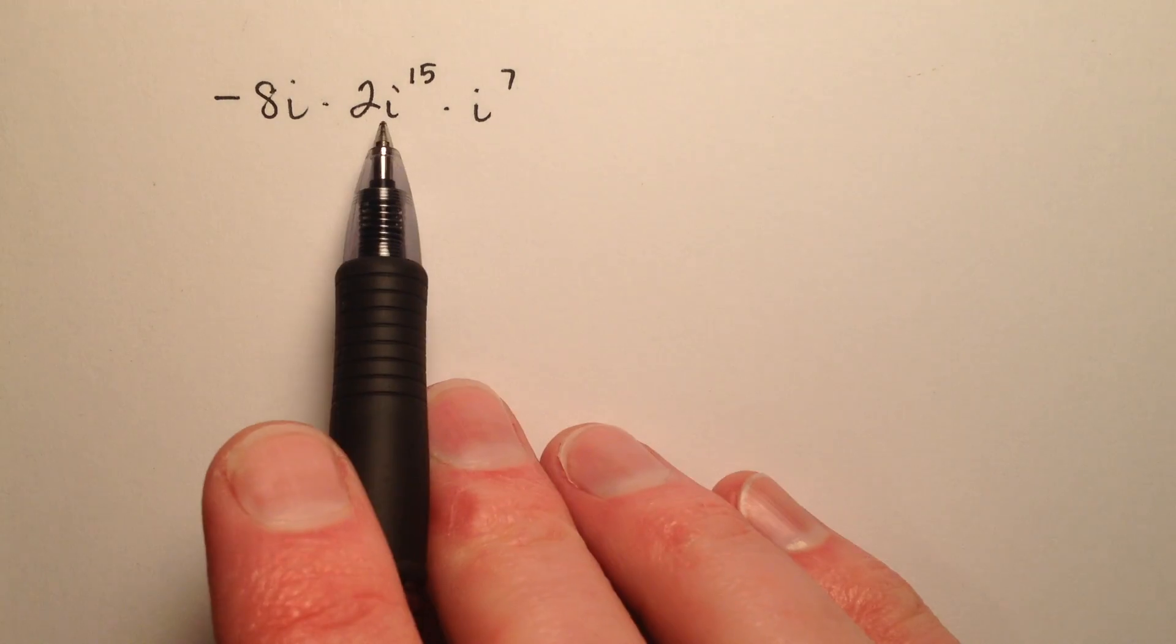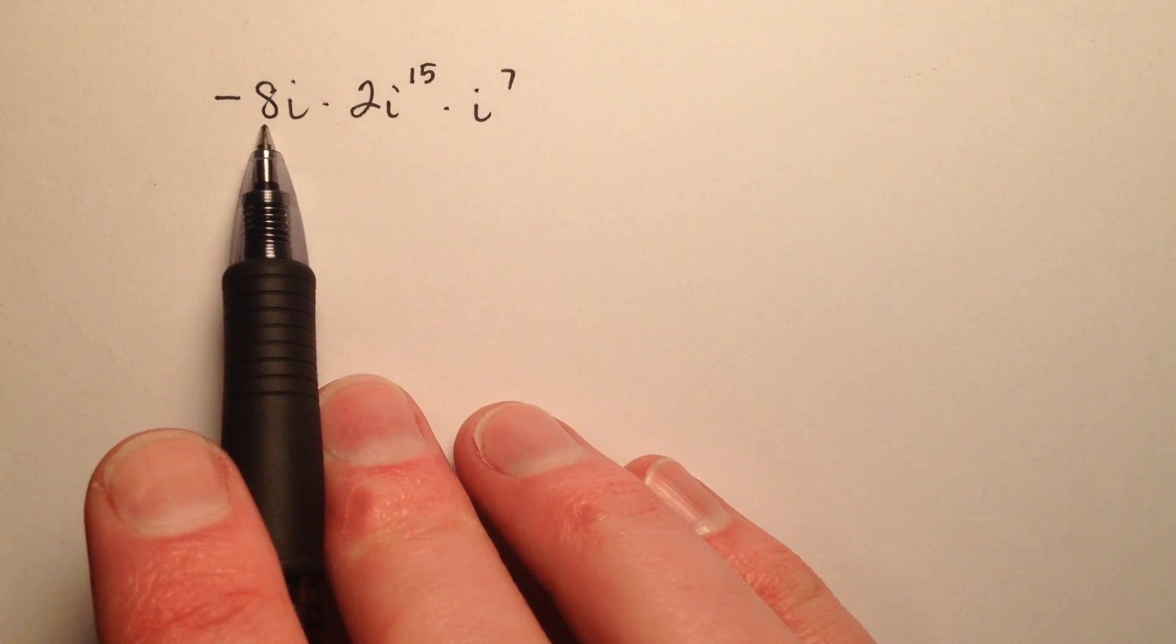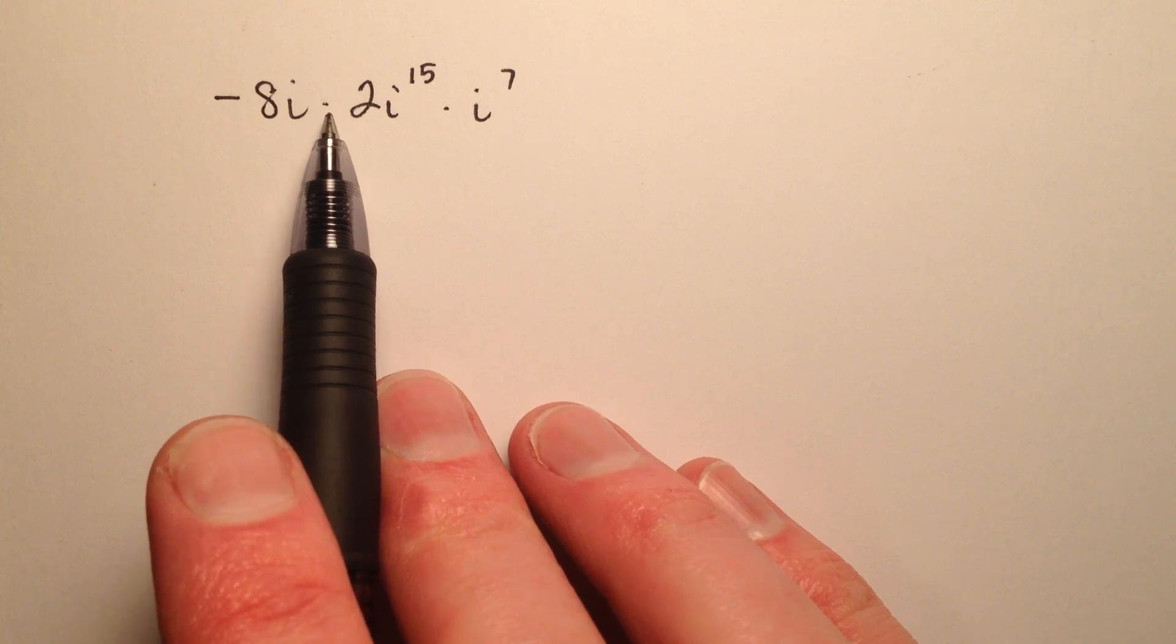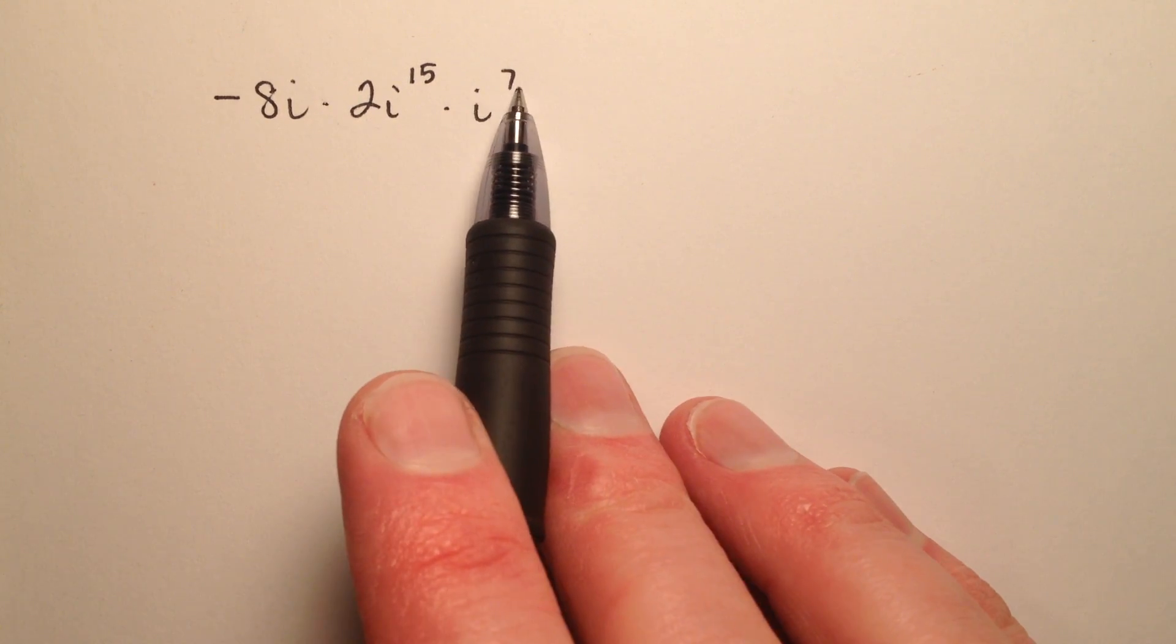Here we have an expression which includes three imaginary numbers, negative 8i, and we're going to multiply that by 2i to the 15th and i to the 7th.